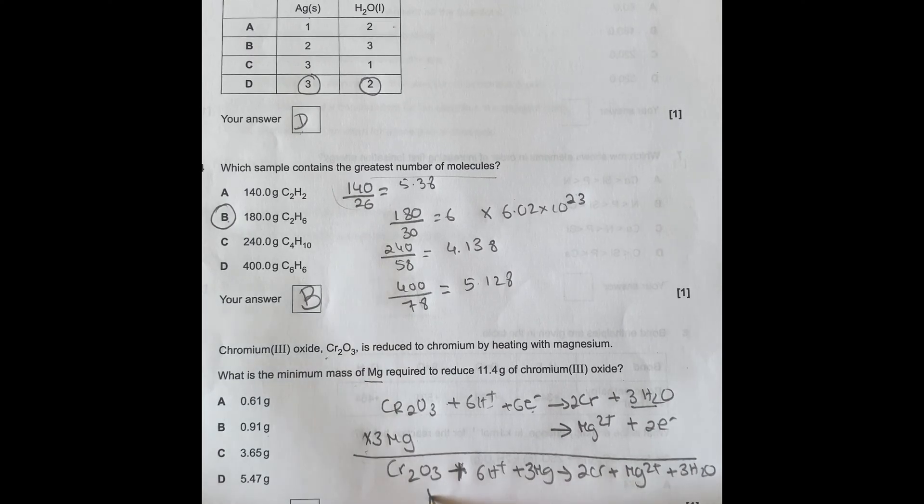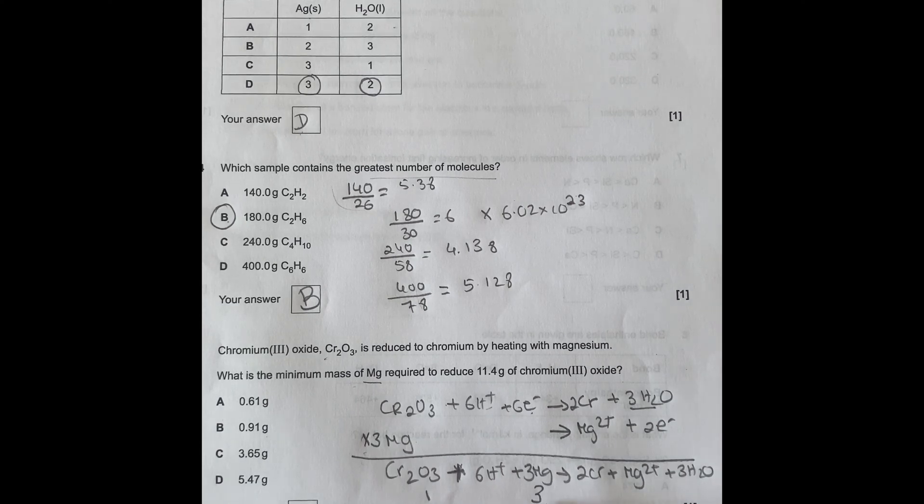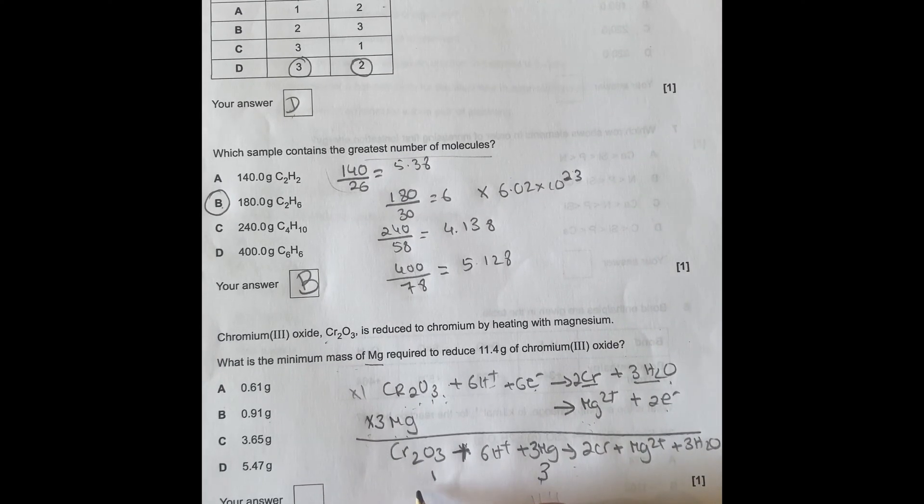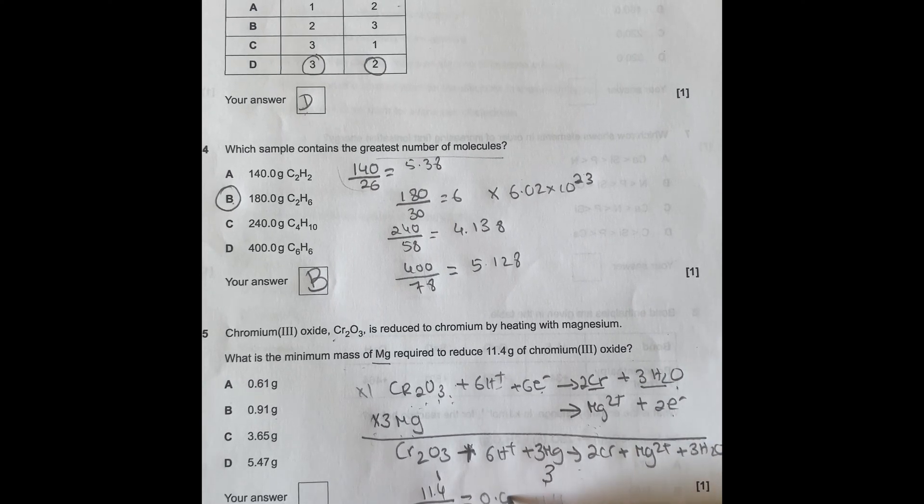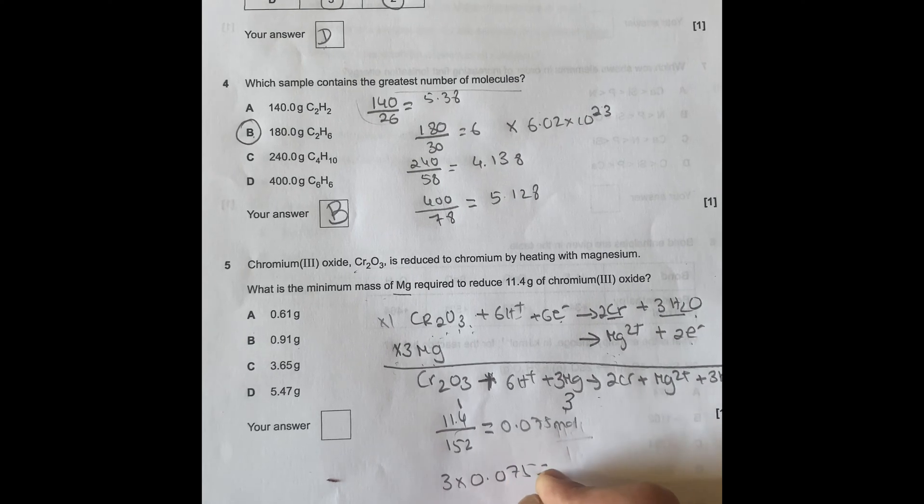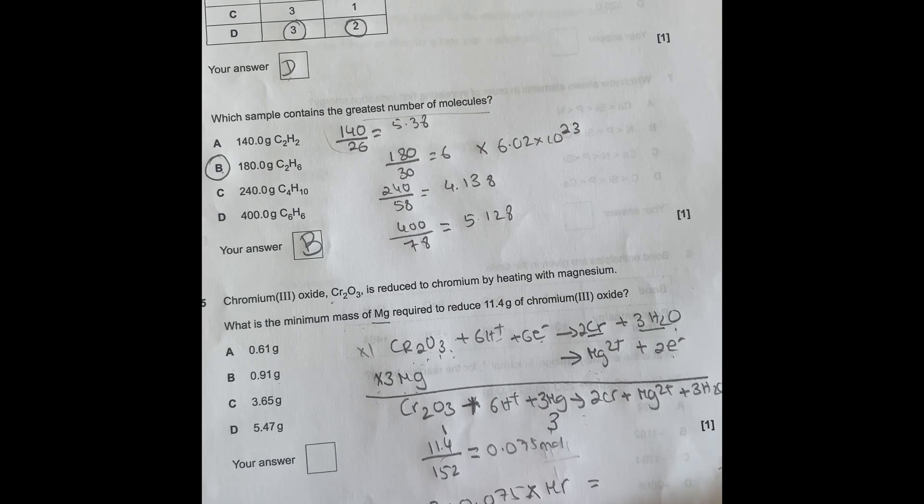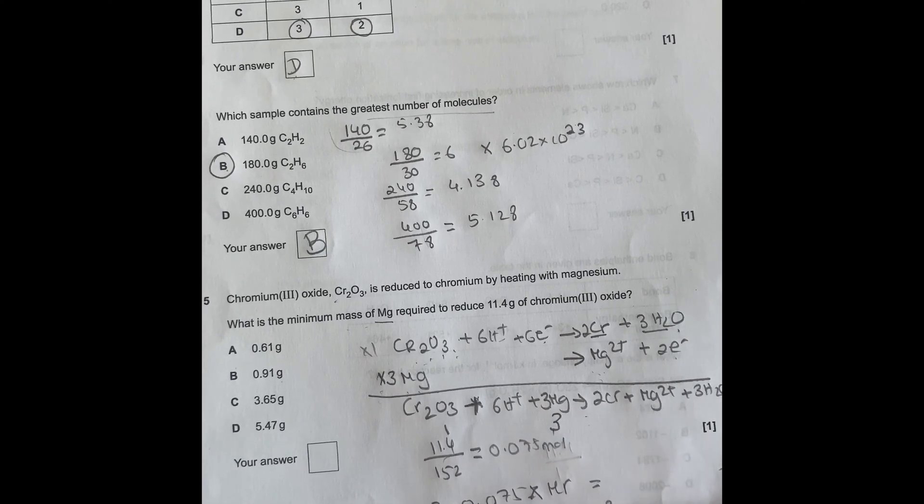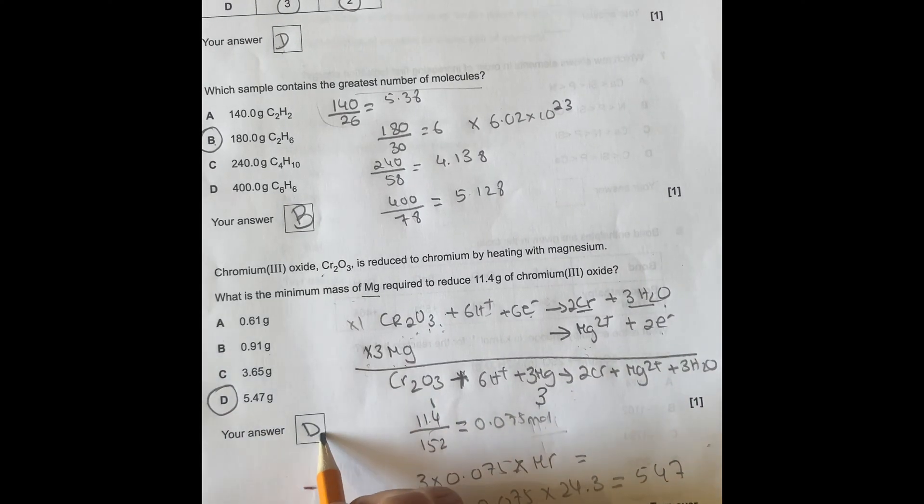So let's carry on with this. So we got the ratio that is 1 to 3. So if you work out the moles of chromium oxide, the moles of chromium oxide is 11.4 grams divided by 152, which is the molar mass. That'll give you 0.075 moles of chromium oxide. Because you know the moles of chromium oxide, moles of magnesium is 3 times 0.075. And then you multiply by MR of magnesium, and it should give you the minimum mass. So 3 times 0.075 times 24.3 will give you 5.47. So the answer is D. Hope that's helpful.